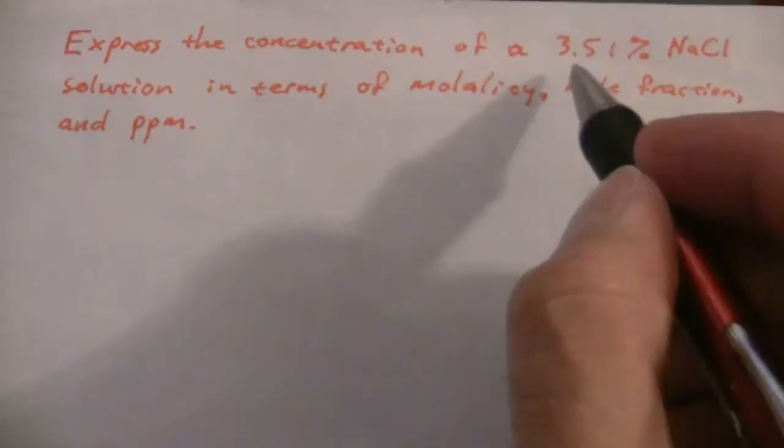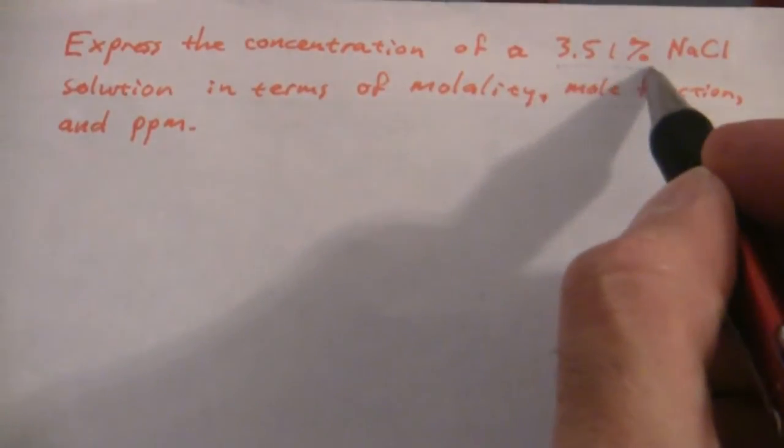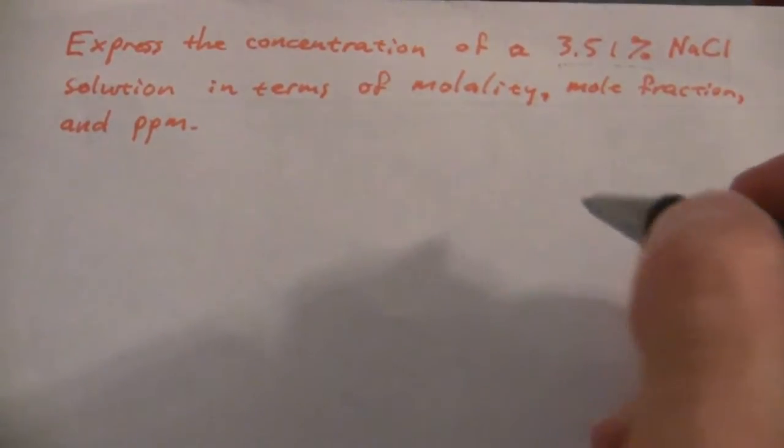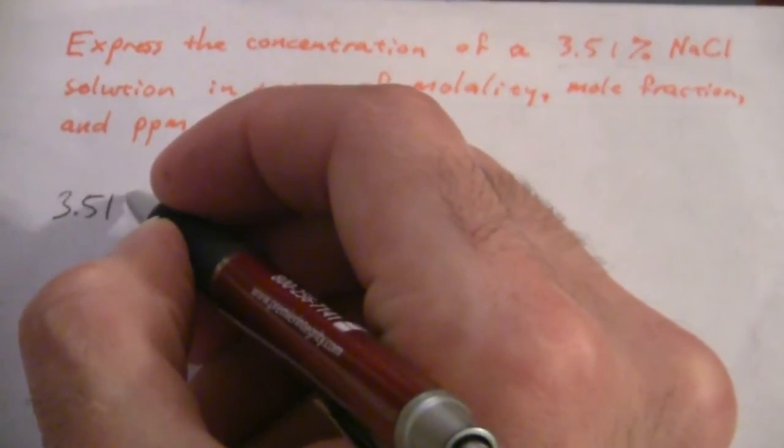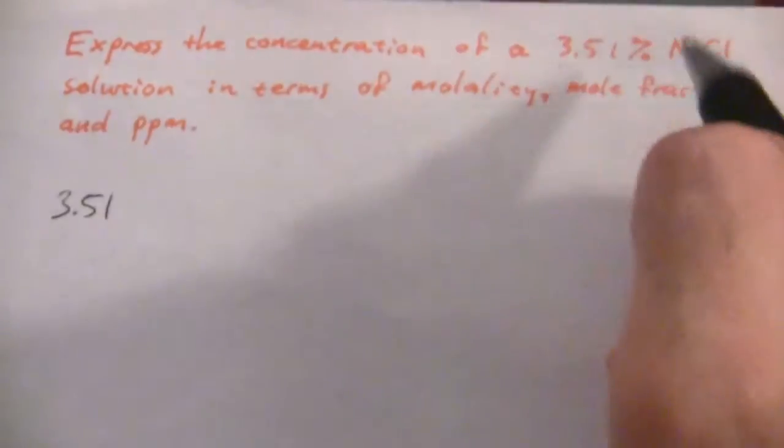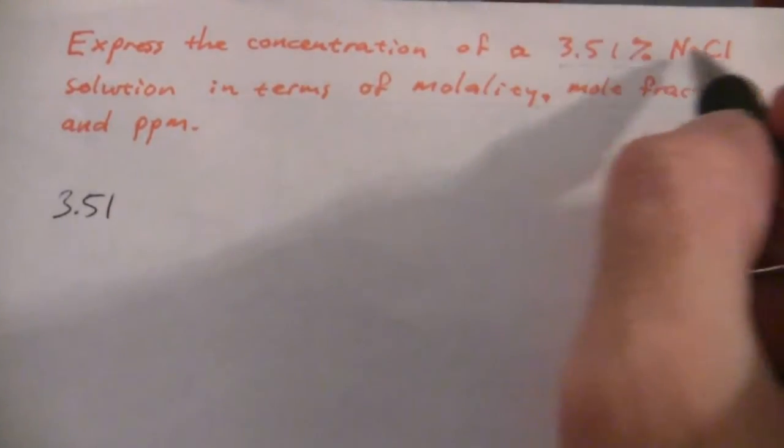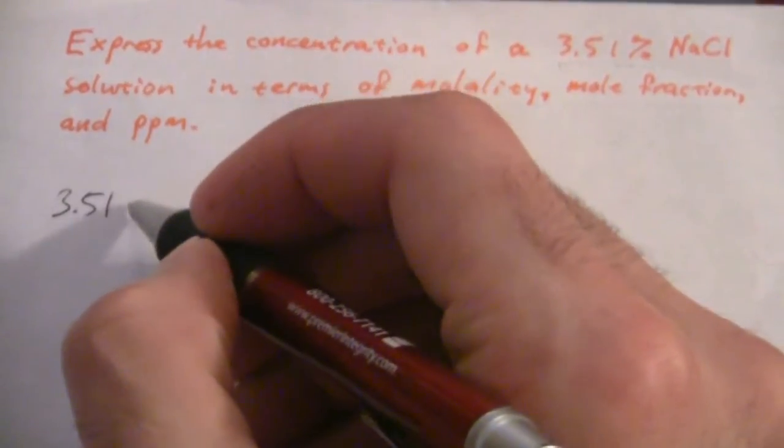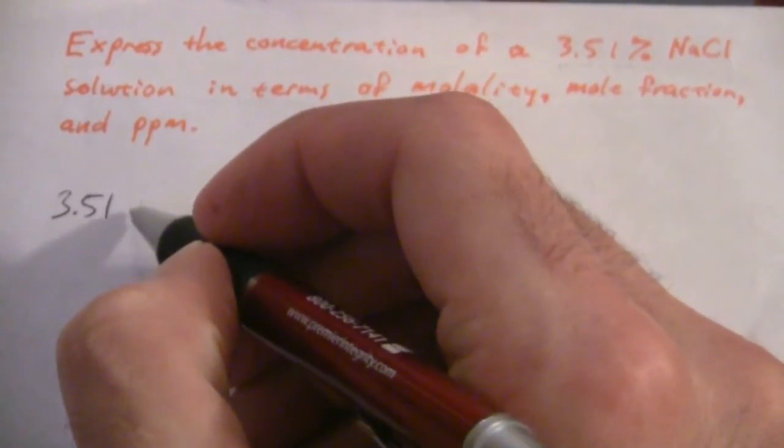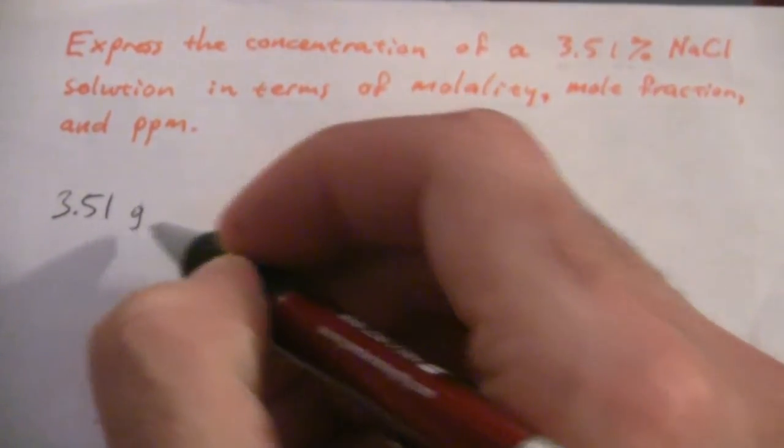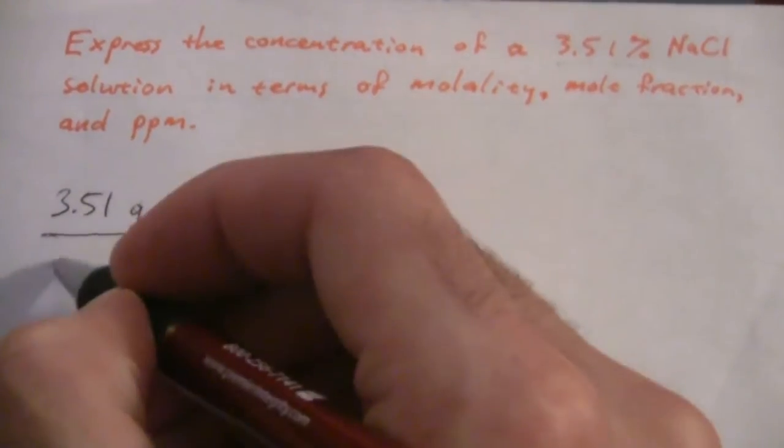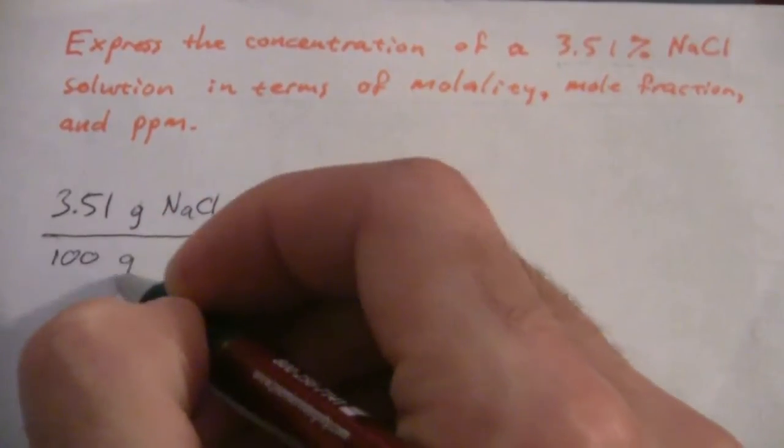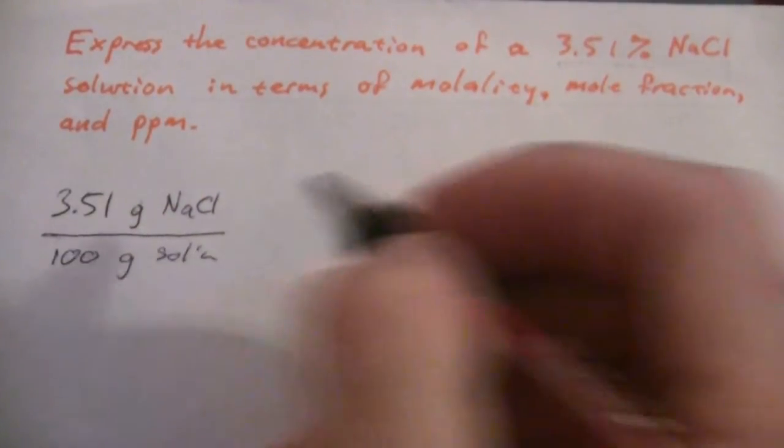Okay, so to start off with, we have 3.51% NaCl. So what does that mean? 3.51%, we assume this is mass percent, since it's not otherwise indicated, and this will be 3.51 grams of NaCl per 100 grams of the solution.